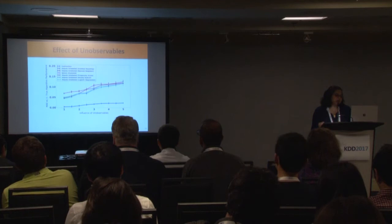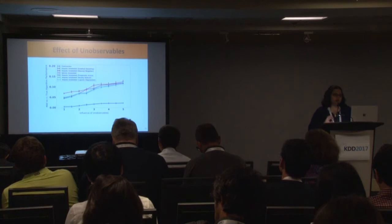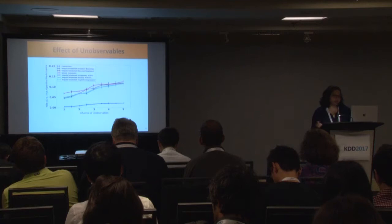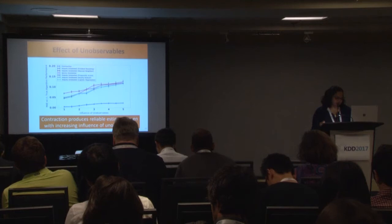These baseline error estimates are higher than that of the contraction curve and also increase swiftly as we increase the influence of unobservables. The contraction curve at the bottom not only produces more reliable estimates but its error rate does not increase nearly as drastically compared to the other baselines.